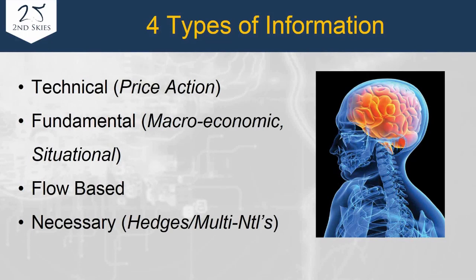A third type of information is flow-based. For example, Jim Chanos is short Tesla with a large position, which might cause other traders to sell as well. And then there's necessary order flow — such as hedges from multinational corporations. Because the yen has gained so much in strength lately, many Japanese corporations base their business decisions on three-month, six-month, or one-year currency forecasts, and they hedge accordingly.